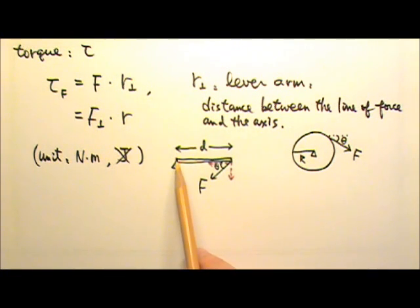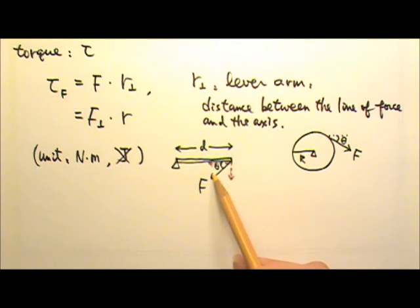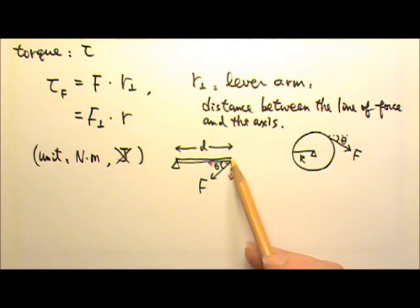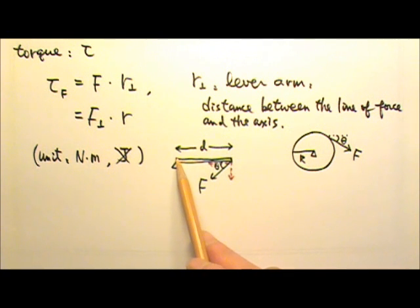For example, I have a bar over here, and this force F is exerted on the bar at this location, at an angle theta. And we want to find the torque produced by the force relative to this axis.